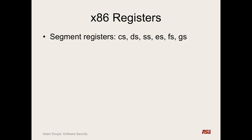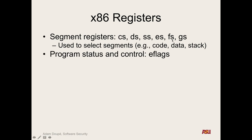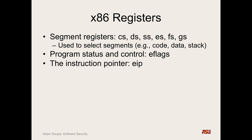There are segmentation registers: CS is the code segment, DS is the data segment, SS is the stack segment. The EFLAGS register is constantly changing based on executed instructions. For example, after a compare instruction, a specific bit is set indicating whether values are equal, less than, or greater than. The instruction pointer — EIP — is incredibly important. It points to the next instruction in memory, not the currently executing one.